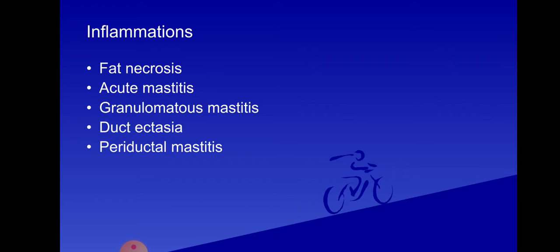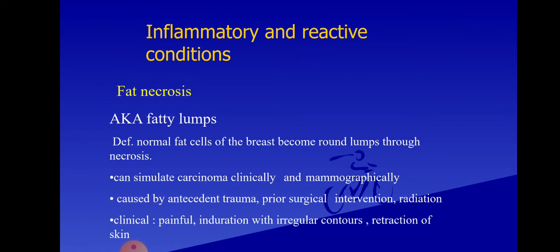Now we discuss inflammatory lesions of the breast, starting with fat necrosis — also known as a fatty lump. Normal fat cells of the breast become a round lump through necrosis, and they can simulate carcinoma both clinically and mammographically. Clinically, they present as painful round lumps in the breast with some irregular mass, and clinical features include painful lumps and induration.